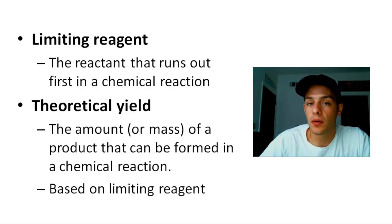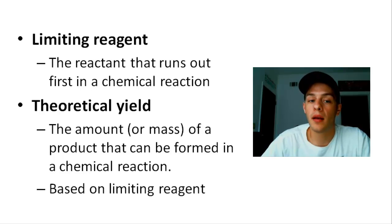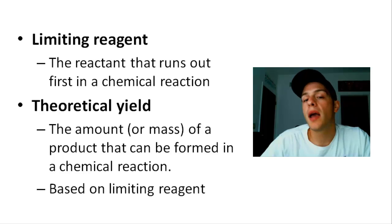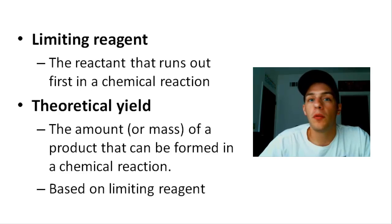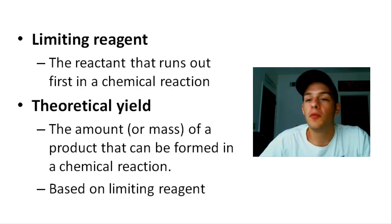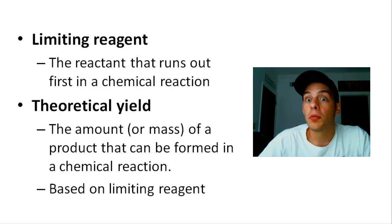The theoretical yield is the amount, or more commonly the mass, of a product that can be formed in a chemical reaction. The theoretical yield is always based upon the limiting reagent. In the peanut butter and jelly example, our limiting reagent was the bread and our theoretical yield was one peanut butter and jelly sandwich. Now let's transfer this knowledge to a chemical problem.